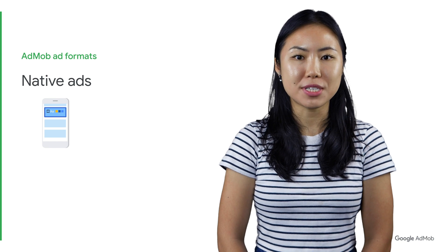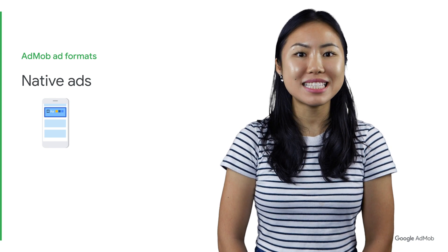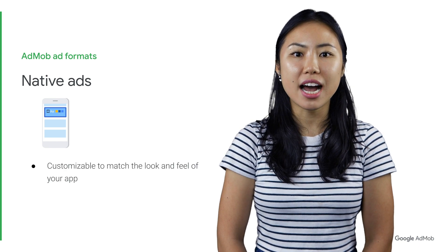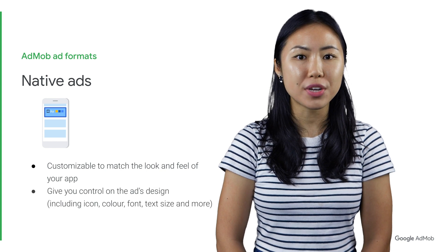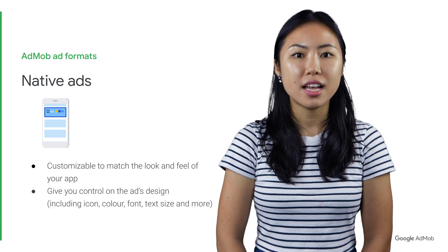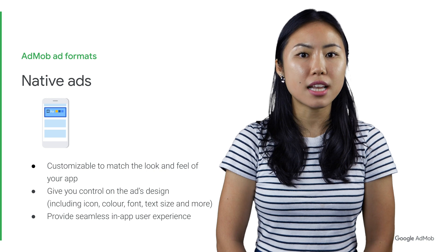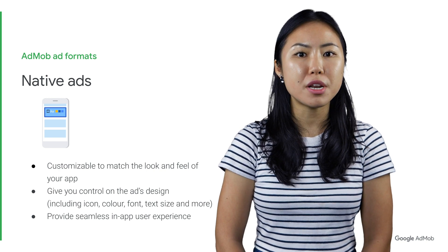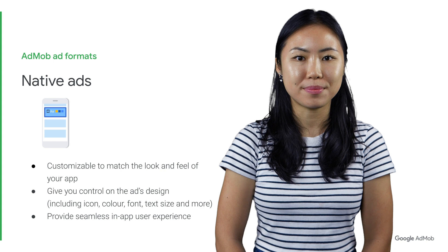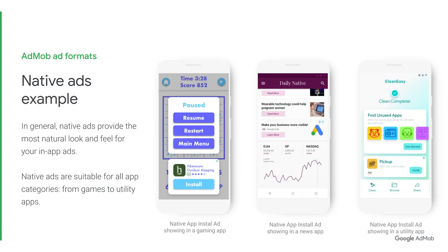The last ad format supported by AdMob is native ads. Native ads are highly customizable, so you can design them to match the look and feel of your app content. The flexibility of native ads allows you to provide a seamless ads experience with minimal interruptions to the app. Here are some examples of native ads, customized to fit the natural look and feel of each app type, including games and utility apps.